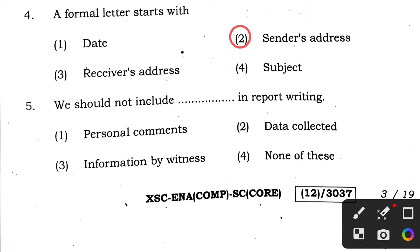Question 5: what we should not include in report writing — information by witnesses and data collected should definitely be there, but personal comments should not be included. So the answer to question 5 is option 1.